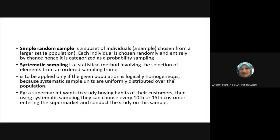Simple random sampling: it's a subset of individuals chosen from a larger set. Each individual is chosen randomly and entirely by chance, and it is categorized as a probability sampling method.